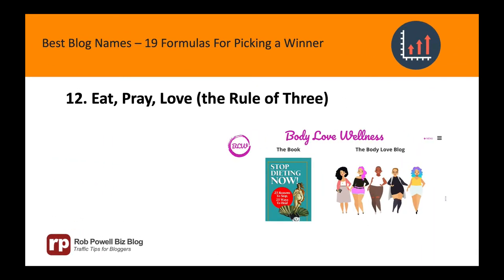Formula 12: Eat, Pray, Love — otherwise known as the Rule of Three. Elizabeth Gilbert's autobiography was a runaway bestseller, and whether you enjoyed the book or not, you have to admit it had a catchy title. Things that come in threes are known to be catchy — as in Julius Caesar's 'I came, I saw, I conquered,' the French motto 'Liberté, Égalité, Fraternité,' or the popular expression 'Wine, Women, and Song.' Here are some examples.